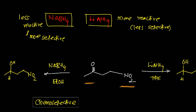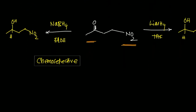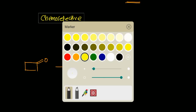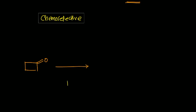LiAlH4 is a versatile reagent that reduces most functional groups in organic molecules, while NaBH4 is used specifically for aldehydes and ketones. Now let's see the mechanism. For cyclobutanone treated with sodium borohydride — the structure of sodium borohydride (sodium tetrahydridoborate) has boron bonded to four hydrogens, and each B–H bond is ionic in character.